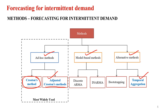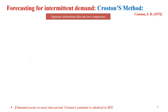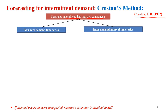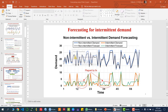Let's look at how the Croston method works. First of all, in the Croston method, which he proposed in 1972, he says that we should separate the intermittent demand into two components: one is the non-zero demand time series, and the other is the inter-demand interval time series.